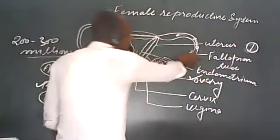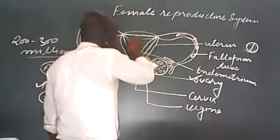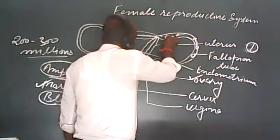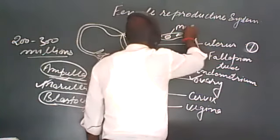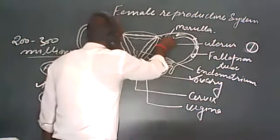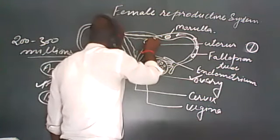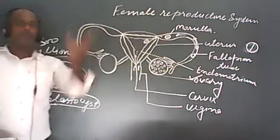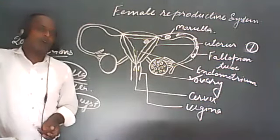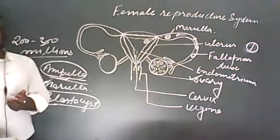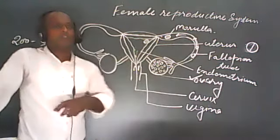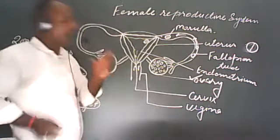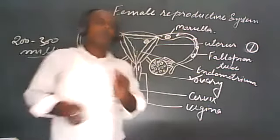The villi help to hold onto the uterine wall. When the blastocyst reaches into the uterine cavity, it attains a morula stage of about 16 cells and attaches to the uterine wall with the help of these finger-like outgrowths called villi. The villi help in the fixation or implantation of the blastocyst with the uterine wall.